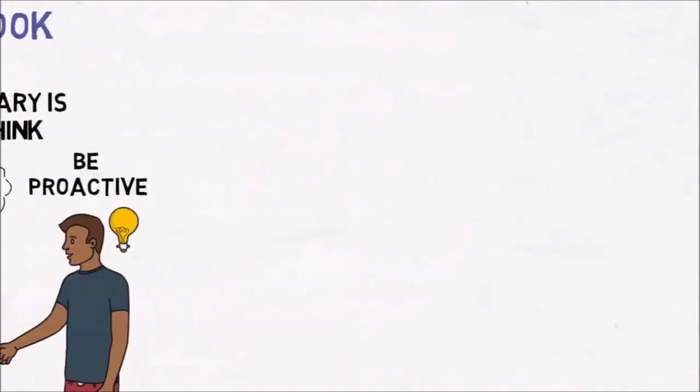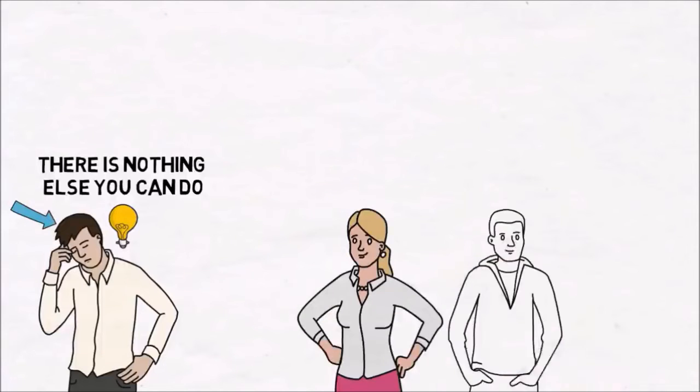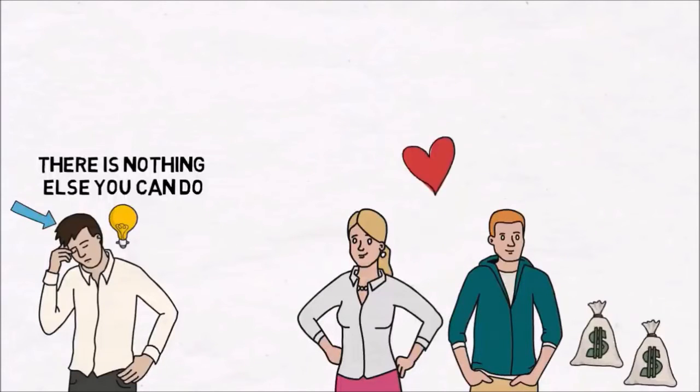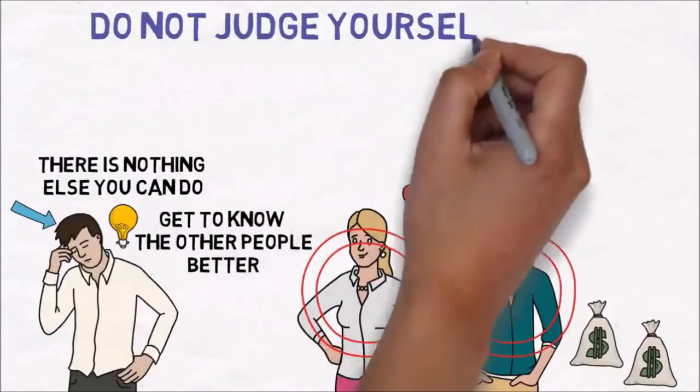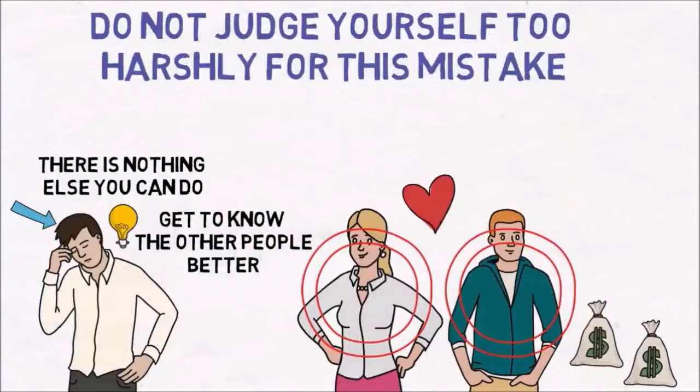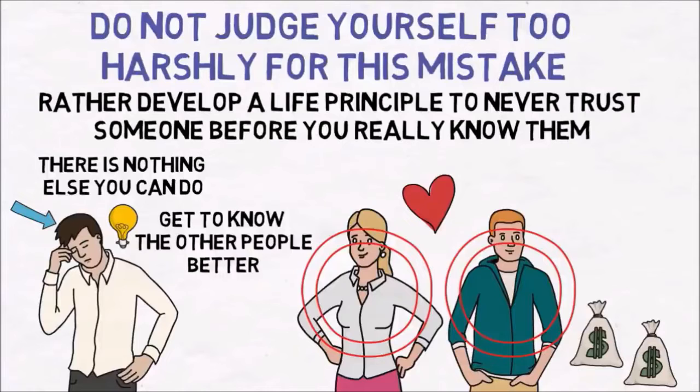However, there are some situations where there is nothing else you can do, other than to think what kind of moral lesson you can learn from the event. For example, if somebody close to you betrayed you, a close friend stole a fortune from you, or a spouse cheated on you, your moral lesson would be to get to know the other people better before you confide in them, or even marry them, before you give them your full trust. Don't judge yourself too harshly for this mistake, but rather develop a life principle to never trust someone before you really know them.